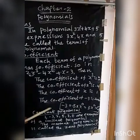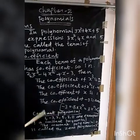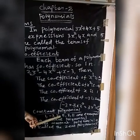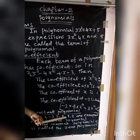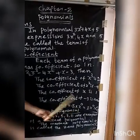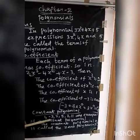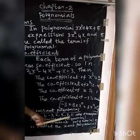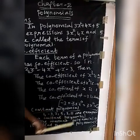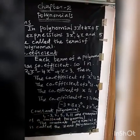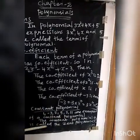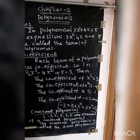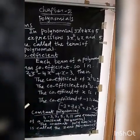Next, constant polynomial. Constants like 1, minus 3, 2, 5, 7, 11 are examples of constant polynomials. The constant polynomial 0 is called the zero polynomial.